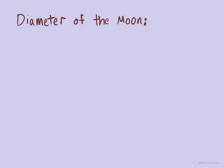Let's start with a couple of quantities. First, the diameter of the moon. If we stood on one point on the moon and drilled right through the center to a point on the other side of the moon, how far would that be in meters? Turns out approximately 3,500,000 meters.